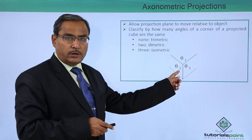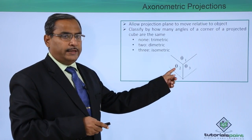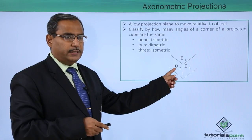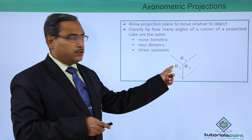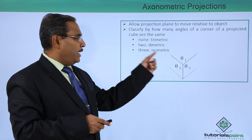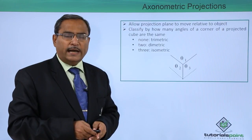If you consider this particular corner of this projected cube, how many angles are you getting? We are getting three angles theta 1, theta 2 and theta 3. If neither of these angles are equal, that will be known as trimetric. When two angles are equal, that will be dimetric. Otherwise, it will be known as the isometric.